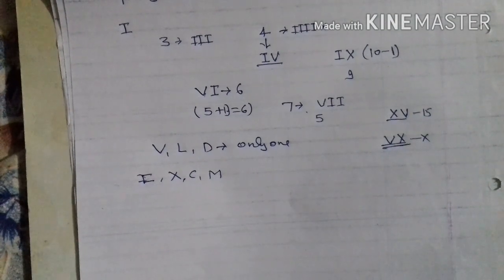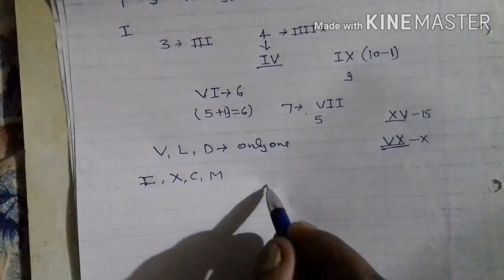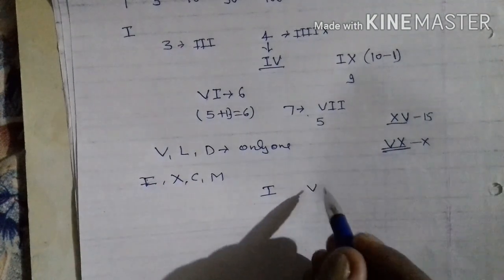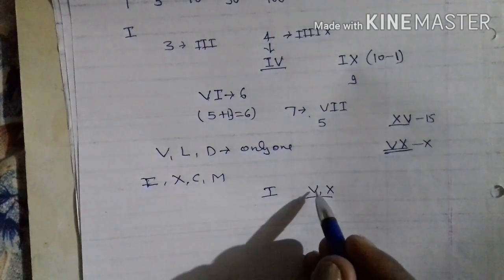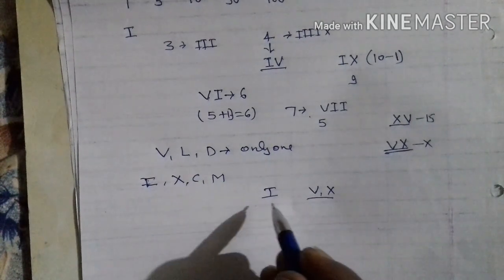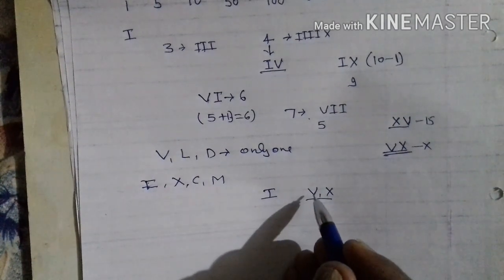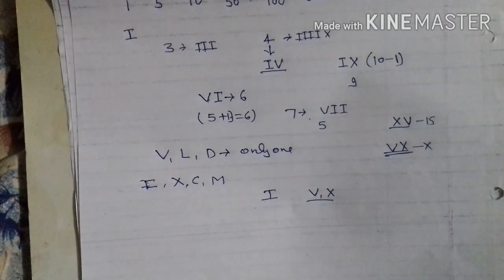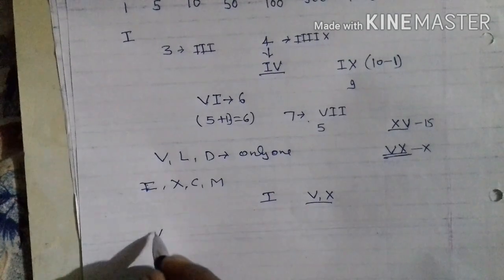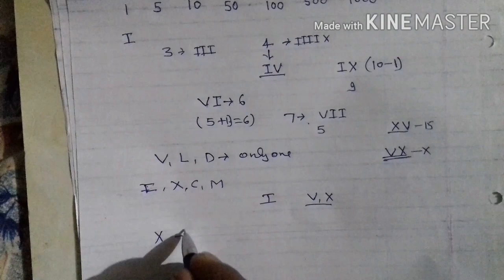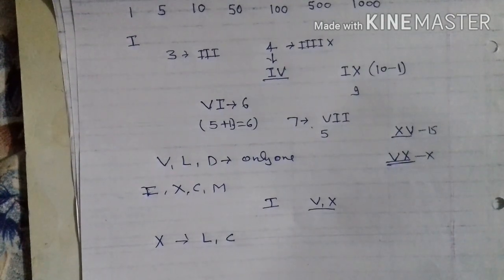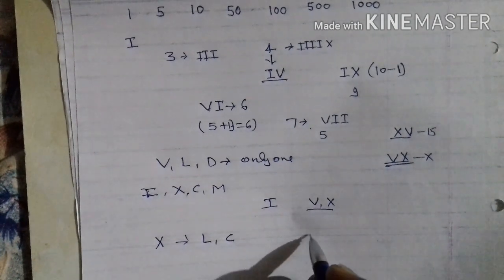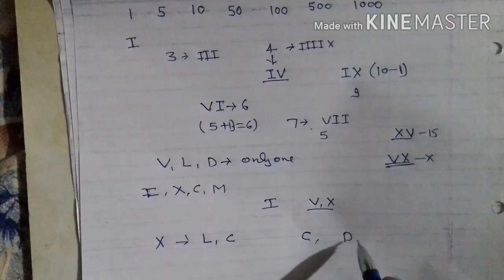Symbol I can be added or subtracted from symbol V and X only. We can write I on the right side of V and X, and on the left side of V and X. Next, symbol X can be added or subtracted from L and C only — we can write X to the left and right of L and C only. Symbol C can be added or subtracted from D and M only.